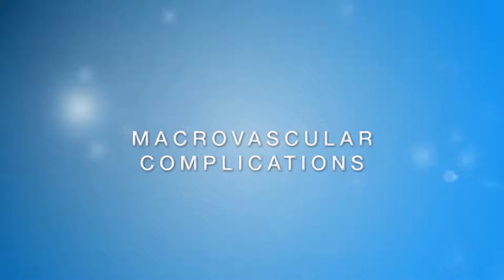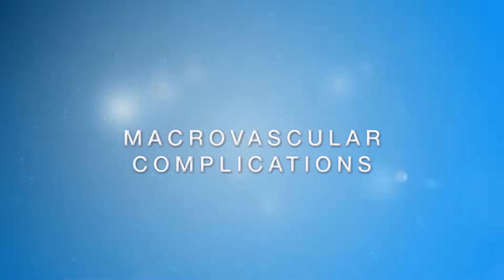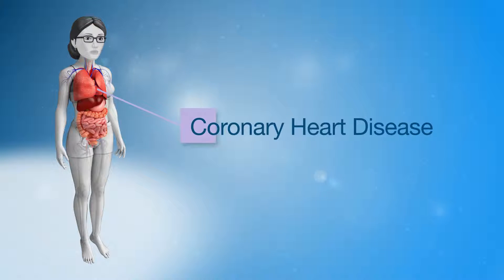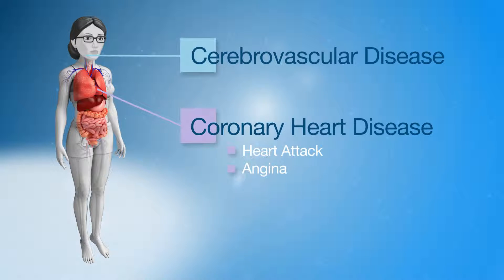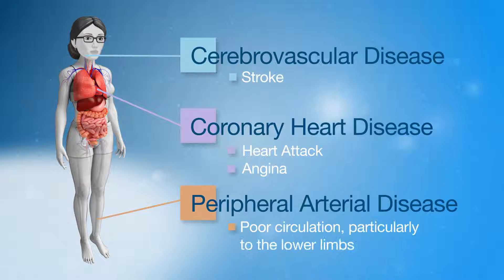Damage to the large blood vessels in our body can lead to cardiovascular disease, which can be divided into three groups: coronary heart disease including heart attack and angina; cerebrovascular disease and stroke; and peripheral arterial disease leading to poor circulation, particularly to the lower limbs.